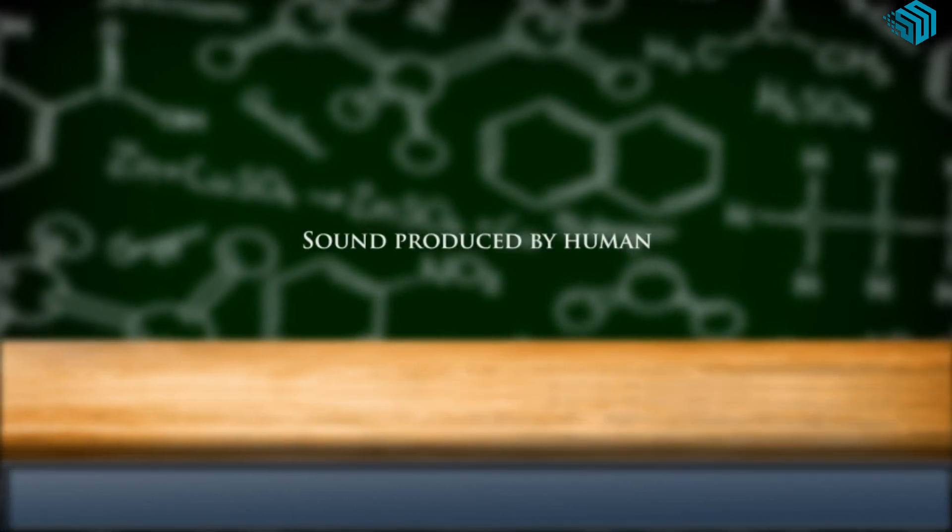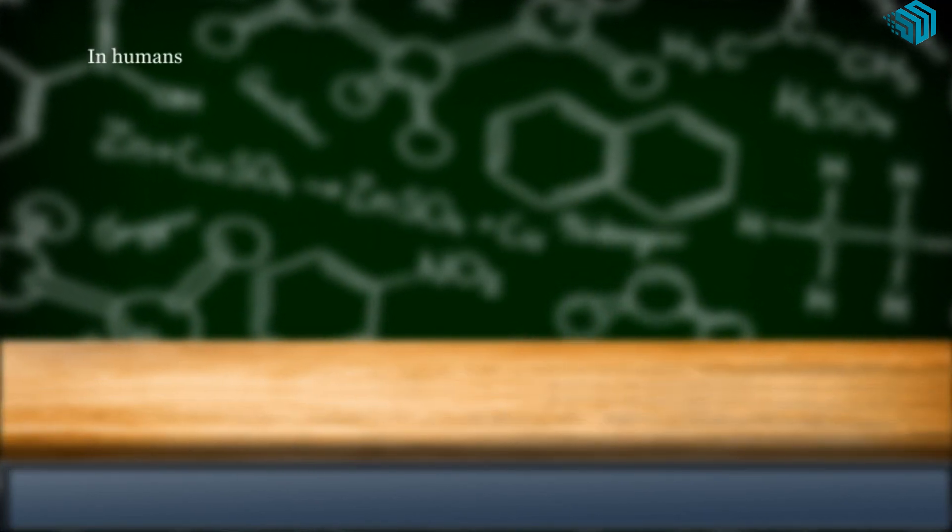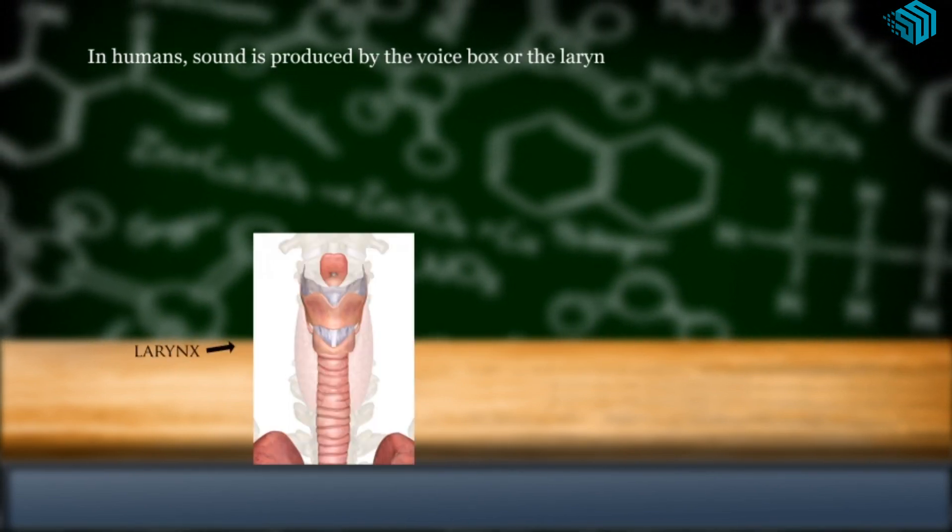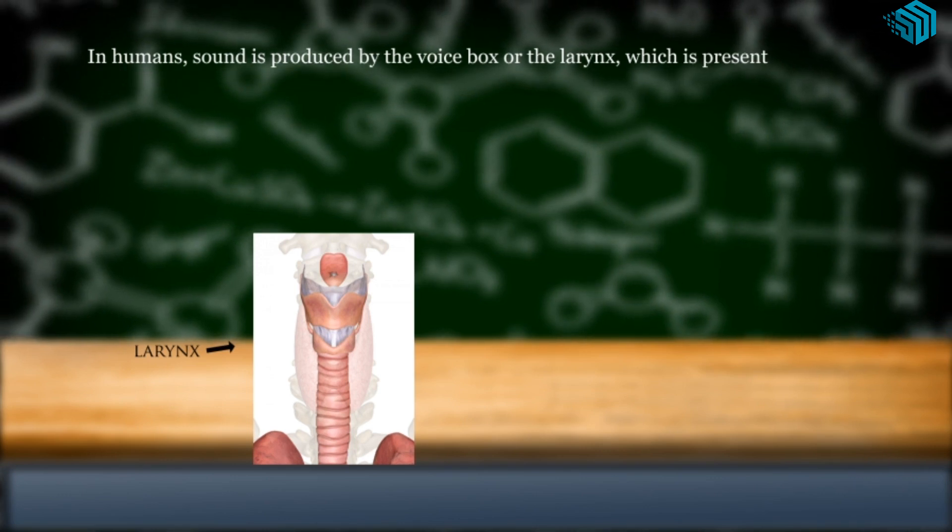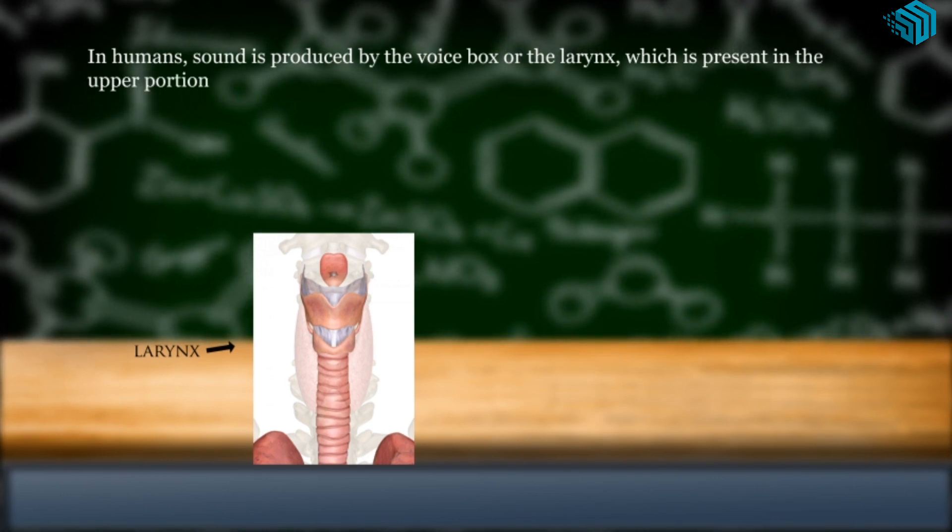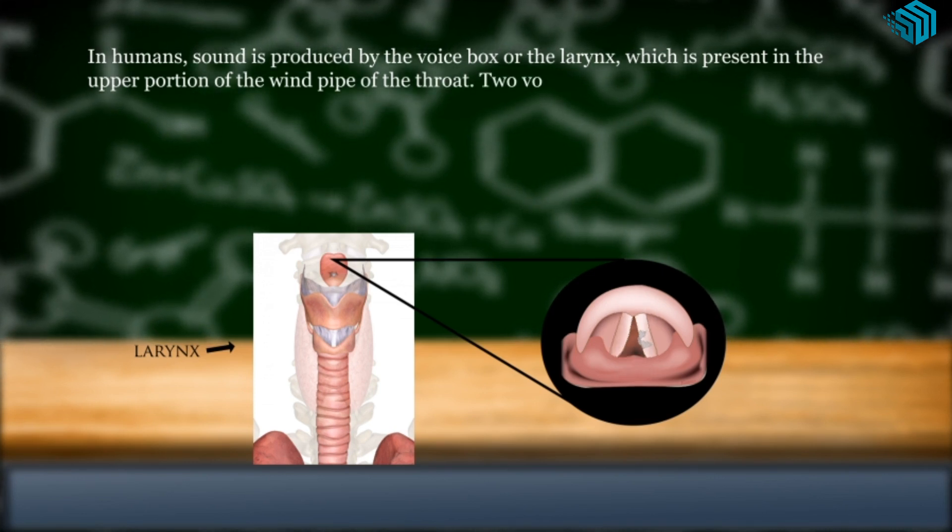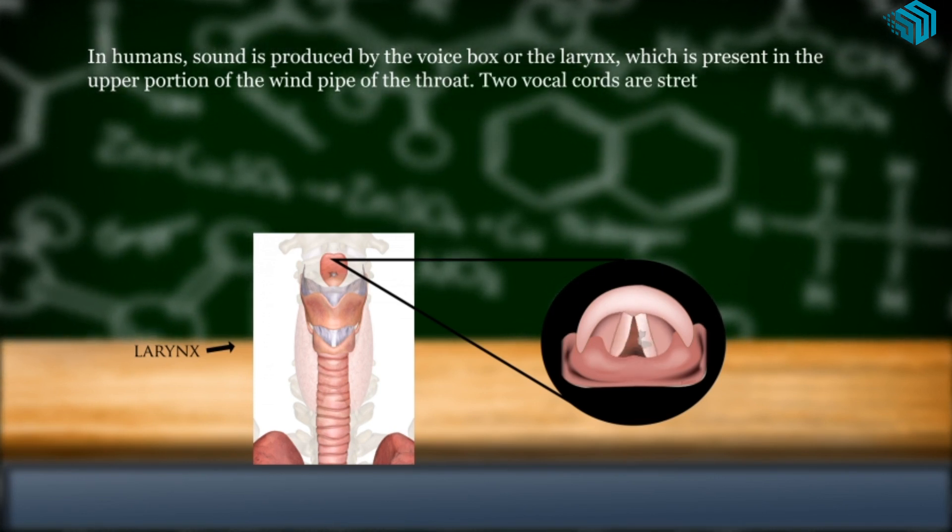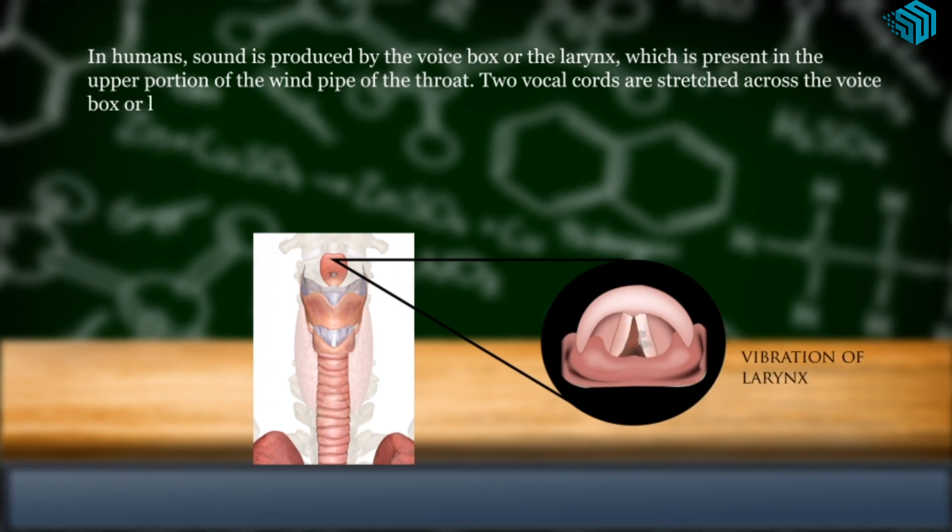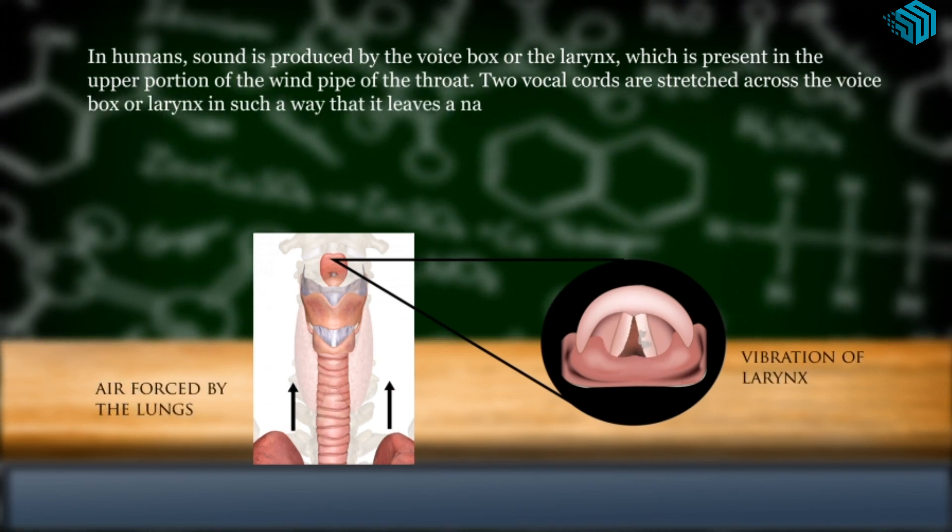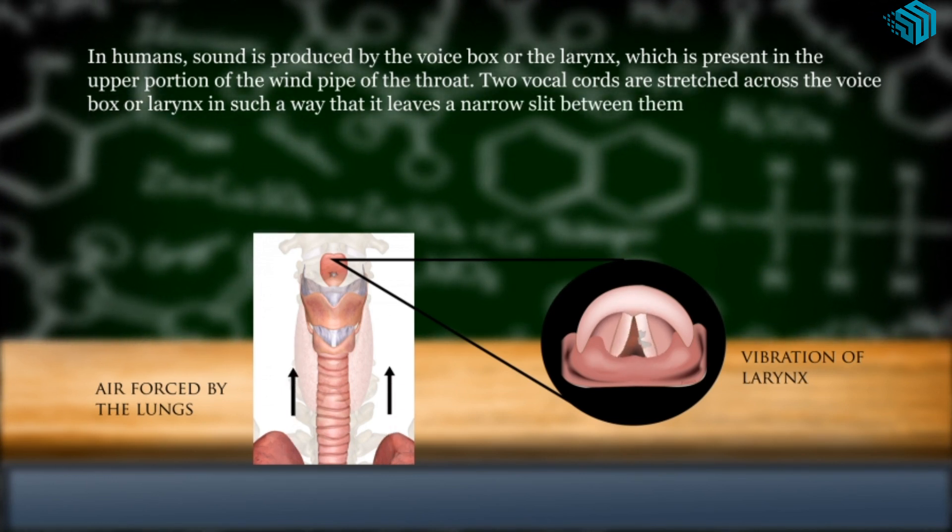Sound produced by human. In humans, sound is produced by the voice box or the larynx, which is present in the upper portion of the windpipe of the throat. Two vocal cords are stretched across the voice box or larynx in such a way that it leaves a narrow slit between them for the passage of air.